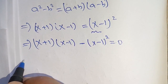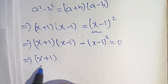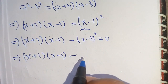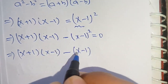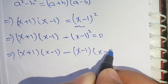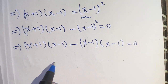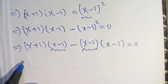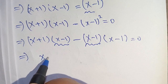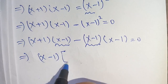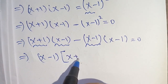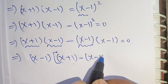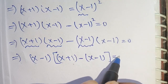Now we can write x plus 1 times x minus 1 minus x minus 1 whole squared as x minus 1 times x minus 1, all equal to 0. From here, x minus 1 can be taken out as a common factor, giving x minus 1 times the remaining bracket x plus 1 minus x minus 1 is equal to 0.